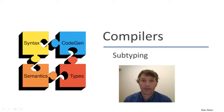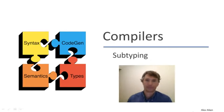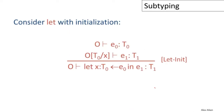In this video we're going to talk about subtyping, another important idea in Cool and other object-oriented languages. Let's begin by looking at the typing rule for let with initialization. Last time we looked at the let rule without an initializer, so let's see how adding the initializer changes things. The body of the rule is almost the same: we type-check E1 in an environment where X has type T0, the declared type in the let.